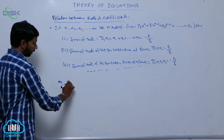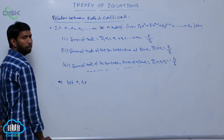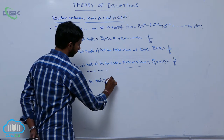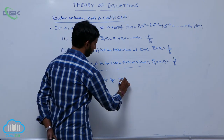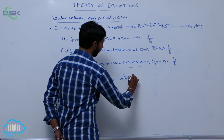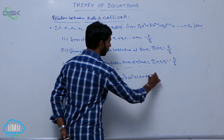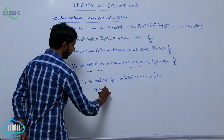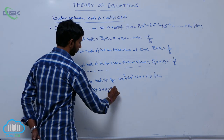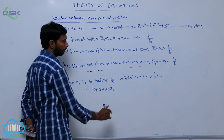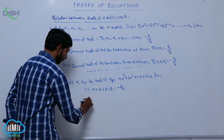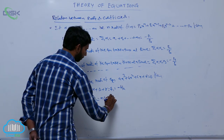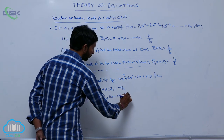Next, let alpha, beta, gamma be the roots of the equation A x cubed plus b x squared plus c x plus d equal to 0. Then the sum of roots, that is alpha plus beta plus gamma, represented as s1, is equal to minus b by a. The sum of product of roots taken two at a time, considered as s2, that is alpha beta plus beta gamma plus gamma alpha, is equal to c by a.